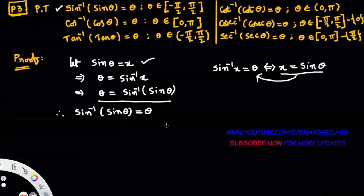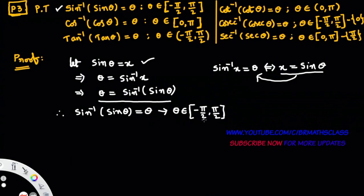It's a very simple proof. The point you have to remember is this result holds good only when theta belongs to the closed interval [-π/2, π/2]. I'll explain this in more detail while doing problems. For right now, remember: sin inverse of sin theta equals theta. Similarly, you can prove cos inverse of cos theta equals theta, tan inverse of tan theta equals theta, and cot inverse of cot theta equals theta.